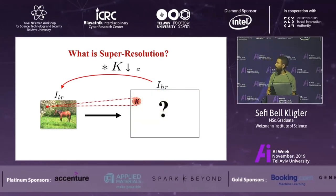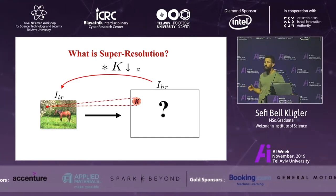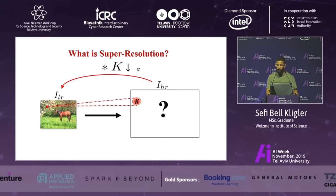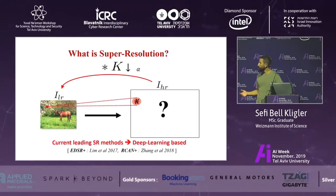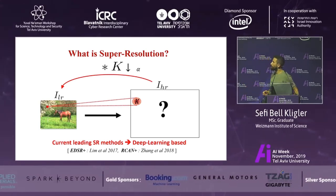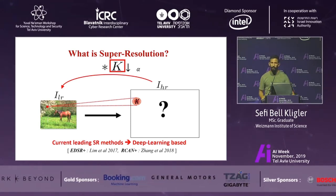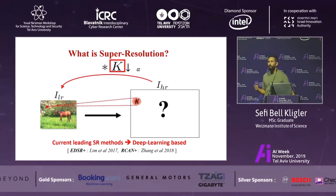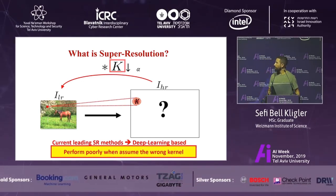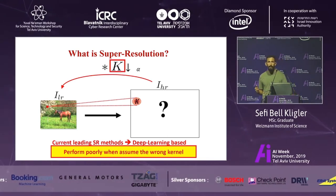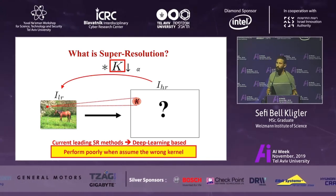This is obviously a highly ill-posed problem, even when we know this kernel, because we want to produce more pixels than what we have. Current leading methods such as EDSR and RCAN use very sophisticated neural networks, but they actually assume a lot of knowledge about this kernel. Not only do they assume knowledge about it, they assume it's constant across all the images in the world. And when this assumption does not hold — as in real images, cell phone photos, or images downloaded from the internet — they perform poorly.